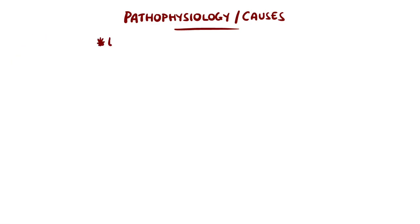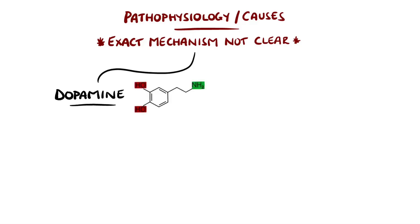Although the exact mechanism is not clear, there are correlations that link both dopamine and iron. Dopamine is thought to correlate with the circadian rhythm. Therefore, low levels of dopamine towards the end of the day could explain why symptoms worsen at night.